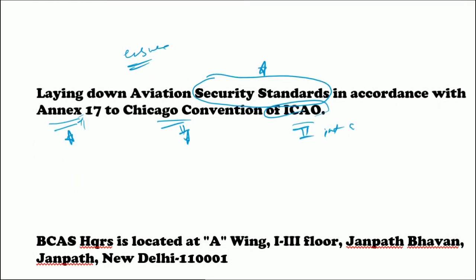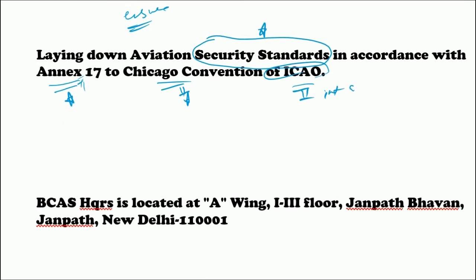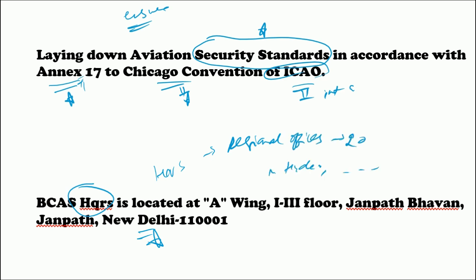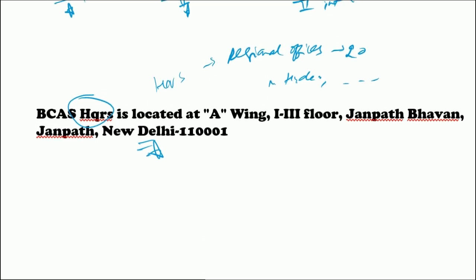The BCAS headquarters is located in New Delhi. They also have regional offices in other parts of the country — there are generally 20 regional offices located in Mumbai, Hyderabad, Bengaluru, and so on. A quick summary: BCAS is the regulatory authority for civil aviation security in India, ensuring all standards are maintained, with headquarters in New Delhi.